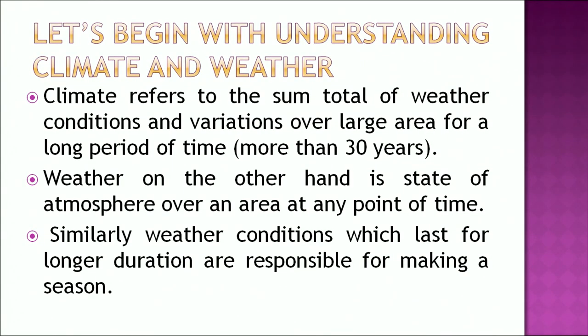Let's begin with understanding the two simple terms, climate and weather. Climate refers to the sum total of weather conditions and variations over a large area for a long period of time, that is about more than 30 years. Weather, on the other hand, is the state of the atmosphere over an area at any point of time. Weather conditions which last for a longer duration are responsible for making a season.